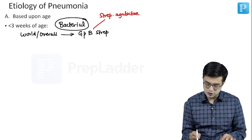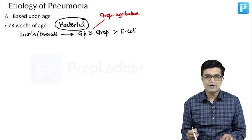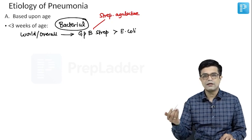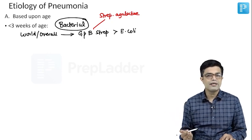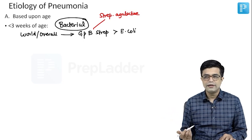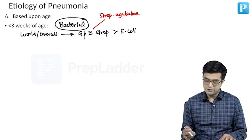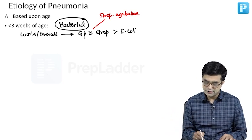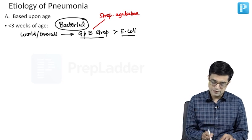The second most common cause after Group B Streptococcus is E. coli, and then you have other gram-negative pathogens including Klebsiella. It can also sometimes be caused by Haemophilus influenzae. But most commonly the top two causes are Group B Streptococcus followed by E. coli.